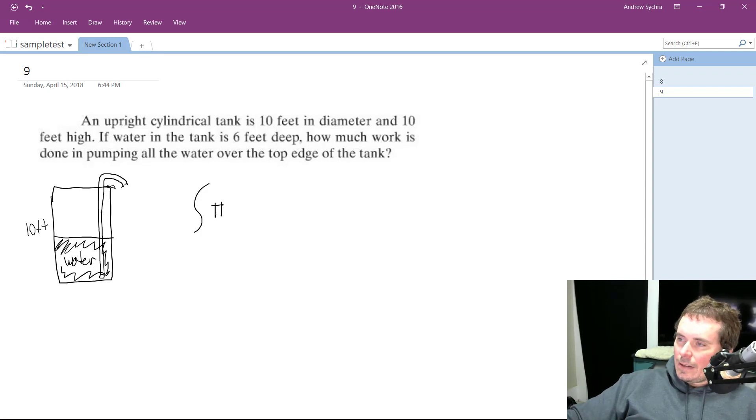It's got a diameter of 10 feet, so the radius is 5, so it's going to be 5². But we also need the weight of water, and because we're using feet, that is 62.4 pounds per cubic foot.